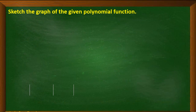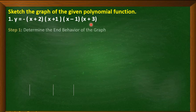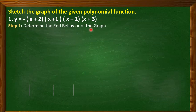Let's consider the first example: sketch the graph of the polynomial function y = −(x + 2)(x + 1)(x − 1)(x + 3). Now let's begin with the first step: determine the end behavior of the graph. To do this, we need to find the leading term.